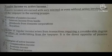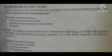Passive income is earned with very minimal or even without active involvement of the taxpayer in the earning process — it is income that the taxpayer did not work for. Examples of passive income include interest income from banks, dividends from domestic corporations, and royalties. Active income, or regular income, on the other hand arises from transactions requiring a considerable degree of effort or undertaking from the taxpayer. Examples include compensation income, business income, and professional income.